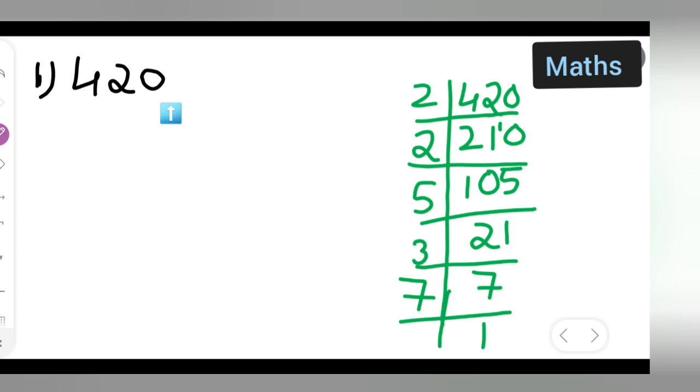So you can write down 420 equals... Here you can see the division process. We divided by 2, then by 2 again, then by 5, then by 3, and finally by 7.